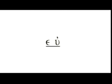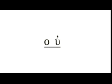EU, as in eulogetos, which means 'blessed' — as in 'eulogy.' And OU, as in ouranos, which means, of course, 'heaven.'